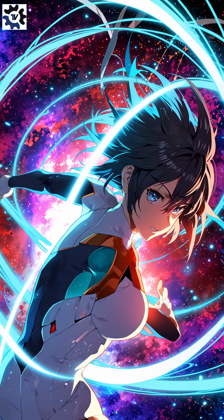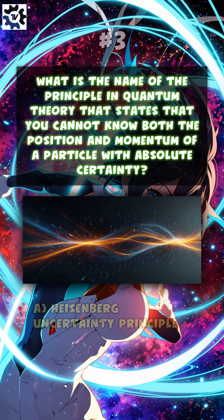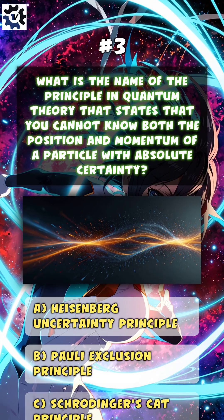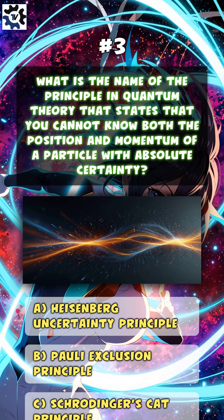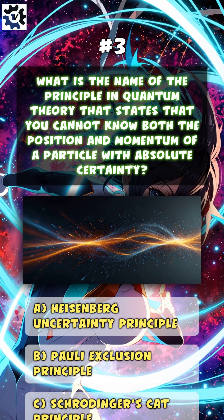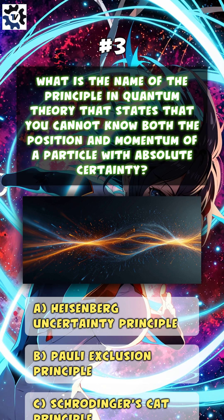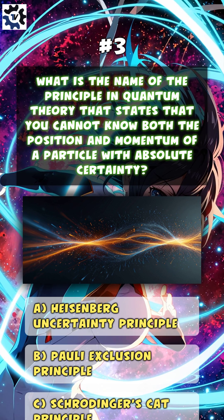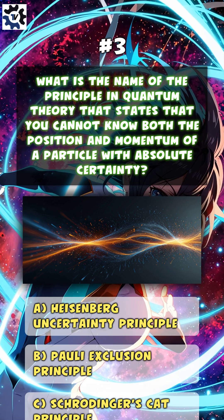Which particle is the smallest unit of light according to quantum theory? The answer is A: Photon. What is the name of the principle that states you cannot know both the position and momentum of a particle with absolute certainty?